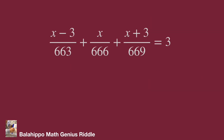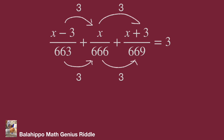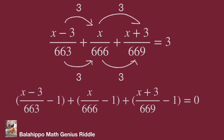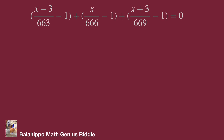I'm going to analyze the given equation. I find the denominators — the difference is plus 3 — and the numerators, also the difference is plus 3. Then each fraction must rewrite the equation as: quantity x minus 3 over 663 minus 1, plus quantity x over 666 minus 1, plus quantity x plus 3 over 669 minus 1, equal to 0.